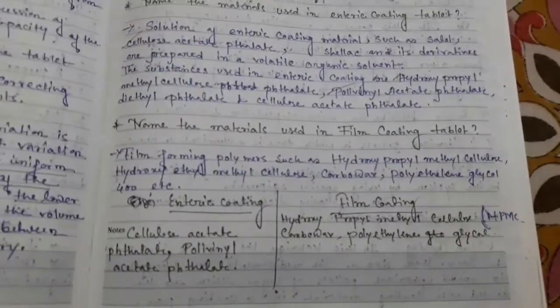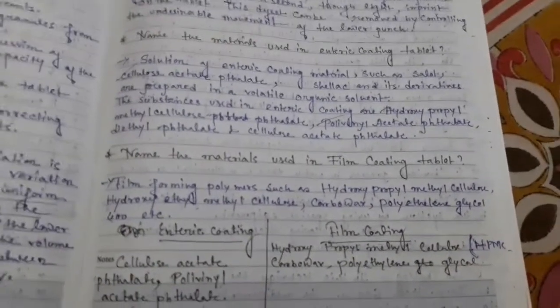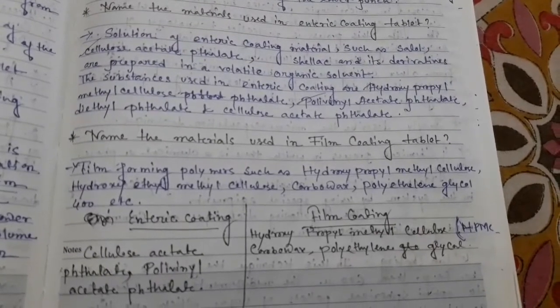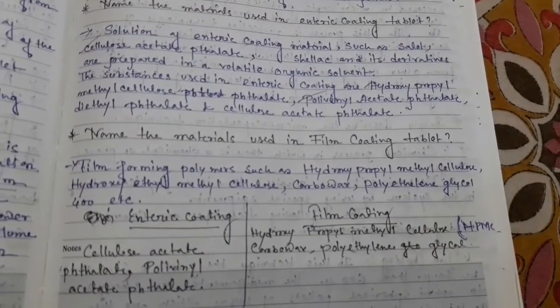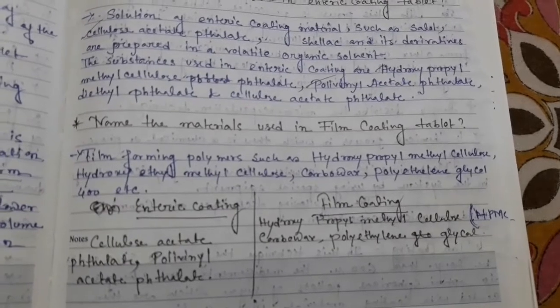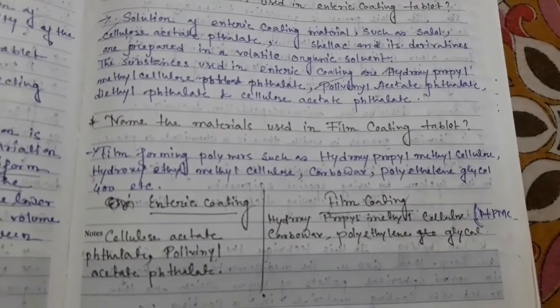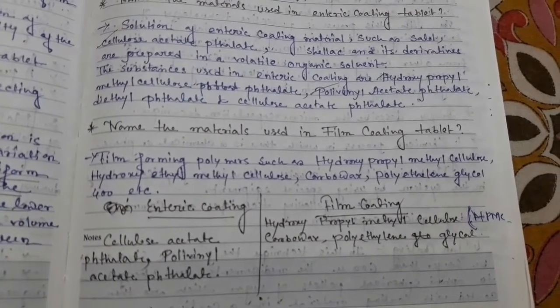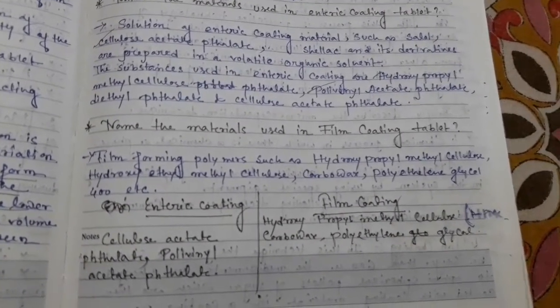Materials used for film coating tablet include hydroxypropyl methylcellulose (HPMC) and carbowax. For enteric coating tablet, materials used are cellulose acetate phthalate and polyvinyl acetate phthalate.